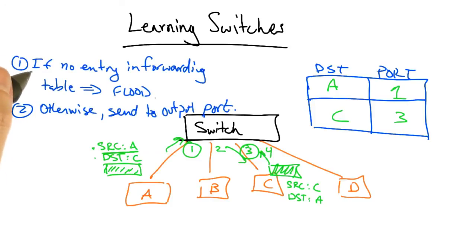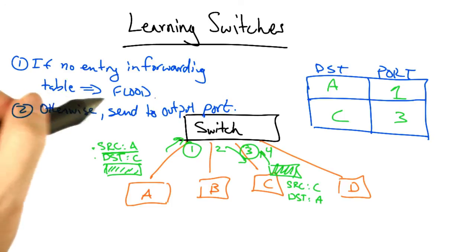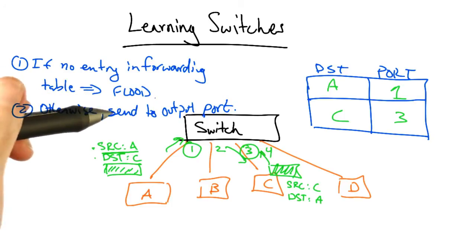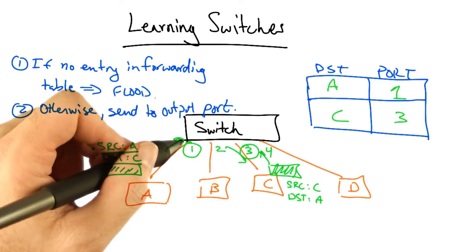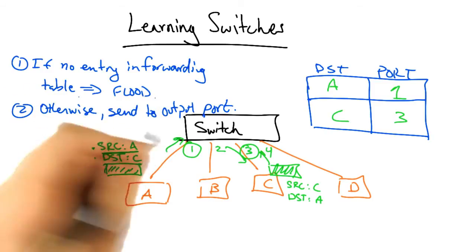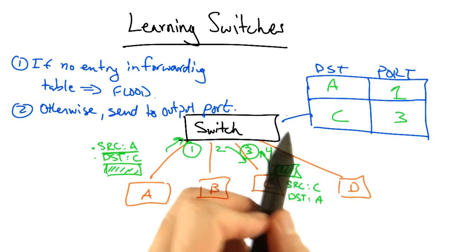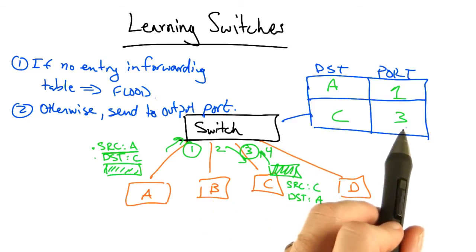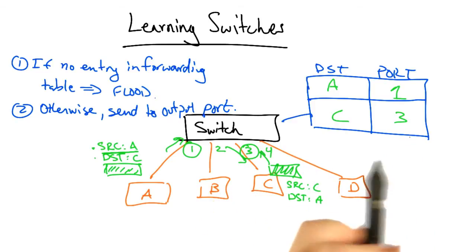In summary, if the switch has no entry in the forwarding table, it floods the frame out every output port except the port on which the packet arrives. Otherwise, if an entry exists in the forwarding table, it sends the frame only on the output port corresponding to the destination.